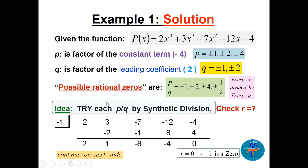To find the zeros we try each P/Q by synthetic division and check the remainder. Try −1: put the coefficients 2, 3, −7, −12, −4 in synthetic division with −1. Bringing 2 down: we get remainder 0. So −1 is a zero. We have found one zero; now we need to find the others.